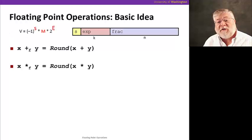The way we go about doing operations in floating point, the basic idea is to do the exact operation first, and then round it to fit inside of a result floating point number representation.